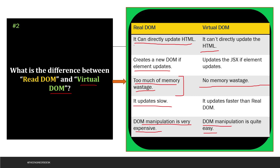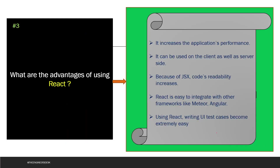Real DOM updates slowly, however virtual DOM updates fast. DOM manipulation is very expensive in real DOM due to memory wastage, whereas DOM manipulation is quite simple and easy in virtual DOM. Moving to the next question: what are the advantages of using React? The first advantage is it increases application performance because it works on the virtual DOM, consumes less memory, and DOM manipulation is quite easy.